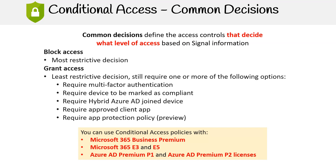Conditional access policies are available and can be utilized with the following licensing plans: Microsoft 365 Business Premium, Microsoft 365 E3 and E5, and Entra ID Premium P1 and Entra ID Premium P2 licenses.